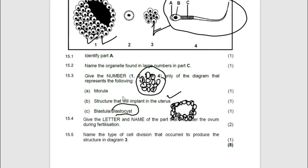Give the letter and the name of the part that will enter the ovum during fertilization. This is the same question asked a second time — it is B, and it is the nucleus.